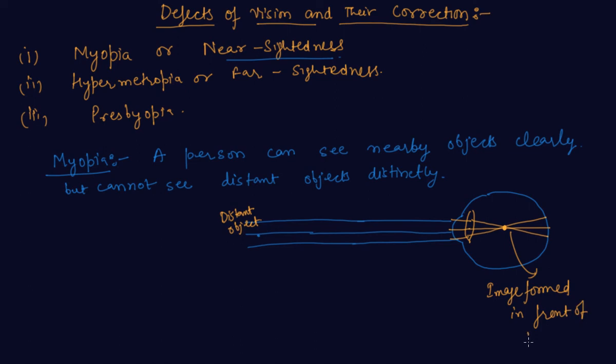This image should be formed at the retina. So to correct this defect, the main reason for this defect is excessive curvature of the eye lens or elongation of the eyeball.